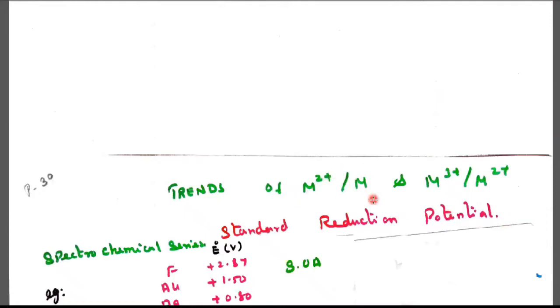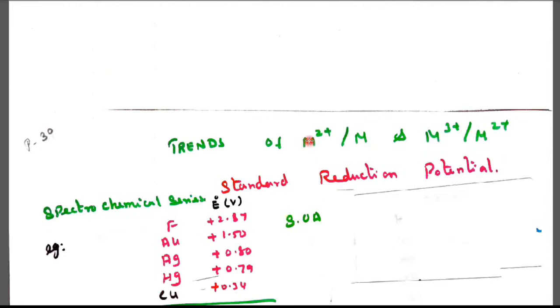Trends of M²⁺/M and M³⁺/M²⁺. M is nothing but metal of 2+ with a metal, and metal of 3+ with metal 2+ ion.